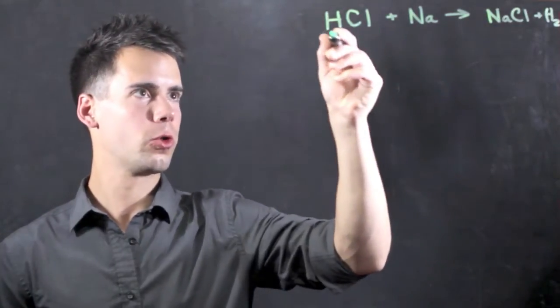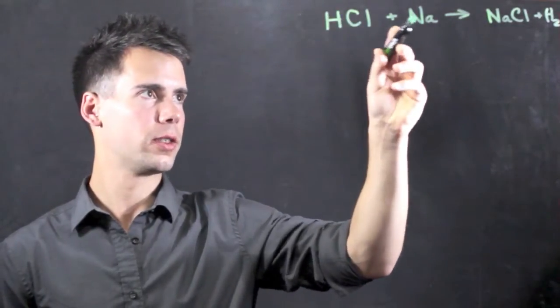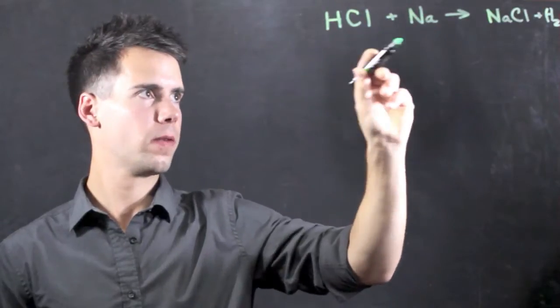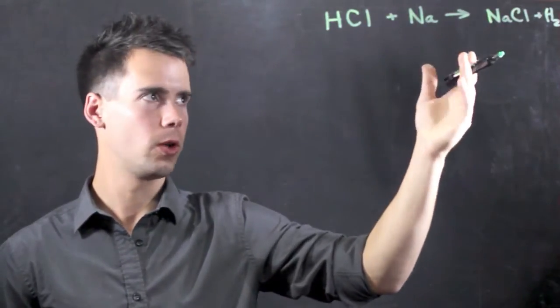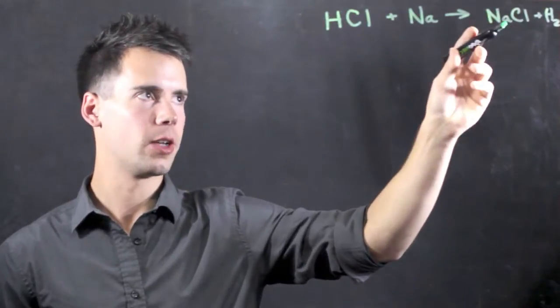Now looking at this chemical equation here, hydrochloric acid, HCl, plus sodium, the products form a reactant, which is NaCl, sodium chloride, which is table salt, plus H2, which is just hydrogen gas.